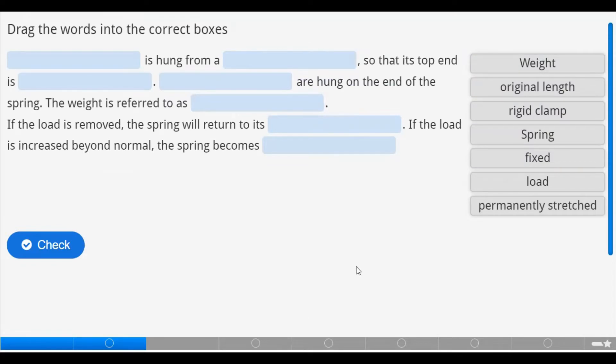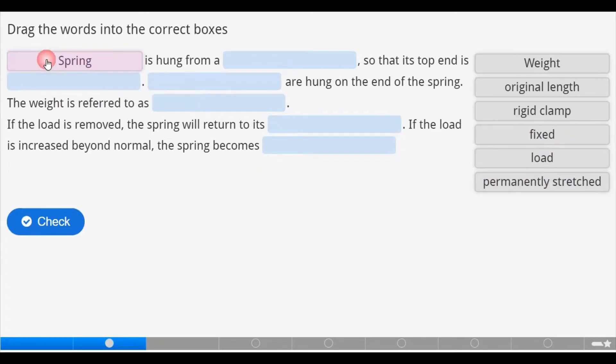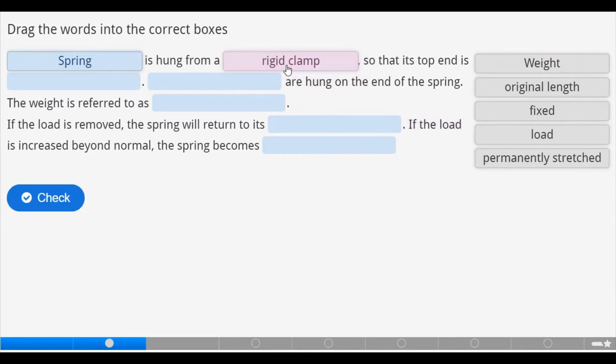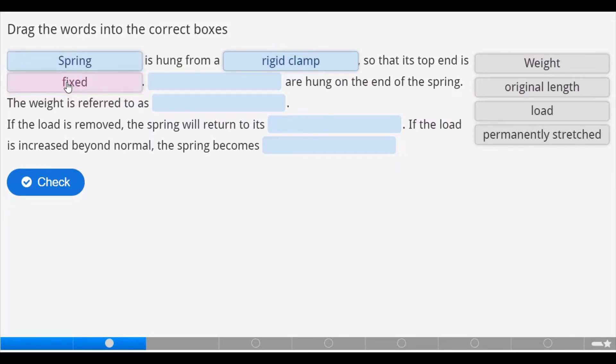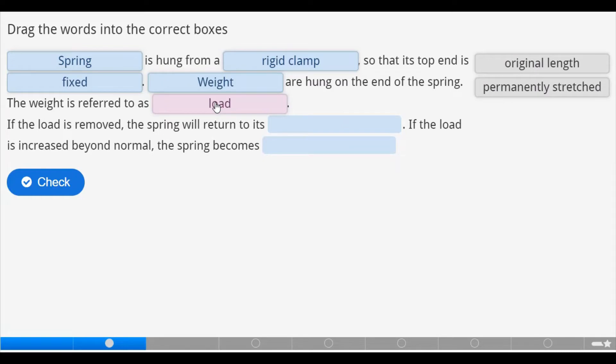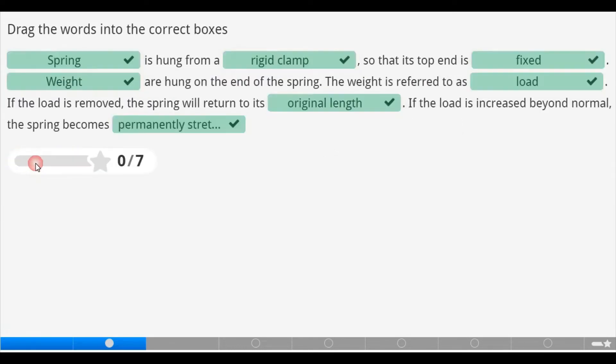Before we do any calculation or solution for today, let's drag these following words into the correct boxes and check. Let's start. Spring is hung from a rigid clamp so that the top end is fixed. Now weights are hung on the end of the spring. The weight is referred to as load. If the load is removed, the spring will return to its original length. If the load is increased beyond normal, the spring becomes permanently stretched. So let's check. Does it?